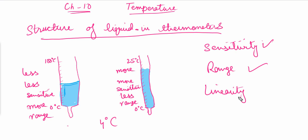The structure of the thermometer cannot change its linearity, because linearity depends on the liquid inside. Water is not linear, which is why we don't use it. Alcohol and mercury are both linear, so an increase in temperature increases the length linearly. Linearity depends on the liquid, not the structure. These are the key concepts for the chapter on thermometers. I hope you liked the video — if you have any questions, ask in the comments. Thank you for watching.